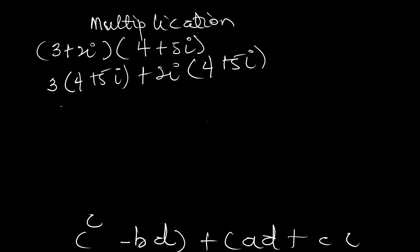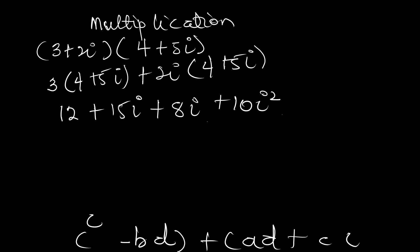Now let's do our distribution. Three times four gives us 12, and three times five i gives us 15i. Then two i times four gives us 8i, and two i times five i gives us 10i squared. So we have 12 plus 15i plus 8i plus 10i squared. We shouldn't forget that i squared is negative one, so 10i squared becomes negative 10.